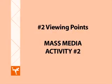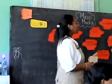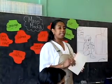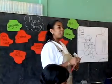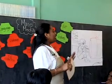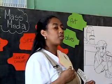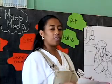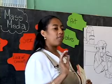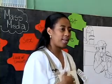Number two: Viewing Points. Mass Media Activity Number Two. Video Segment Number Two. What examples of critical or creative thinking do you see? I want you to make four groups. I am going to give you something to read. You're going to read it and plan a role-play about what is in here — four different things about television. Make groups of four or five, and you'll have about five minutes to plan how you're going to represent what is in here.